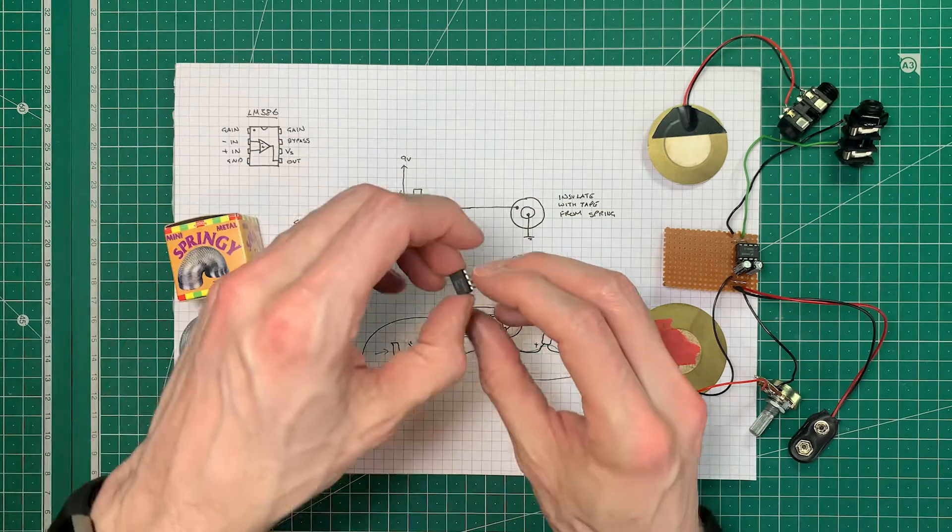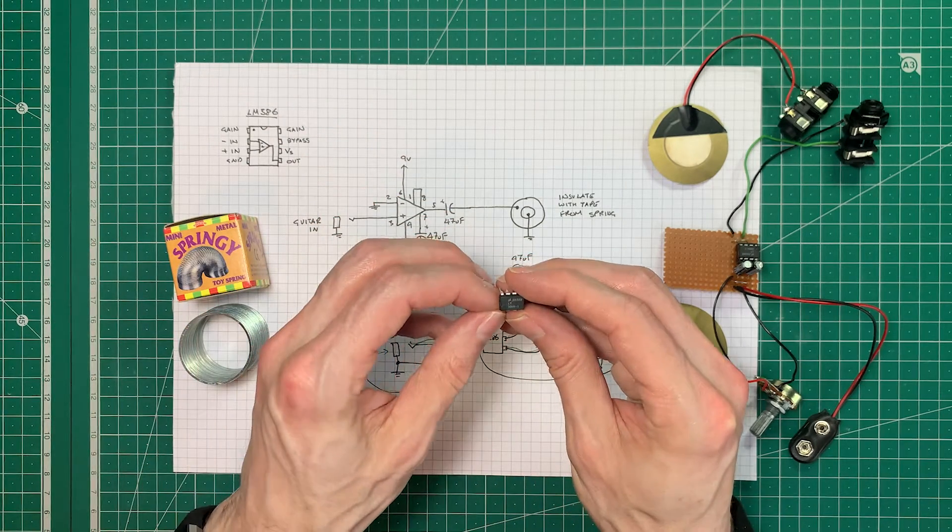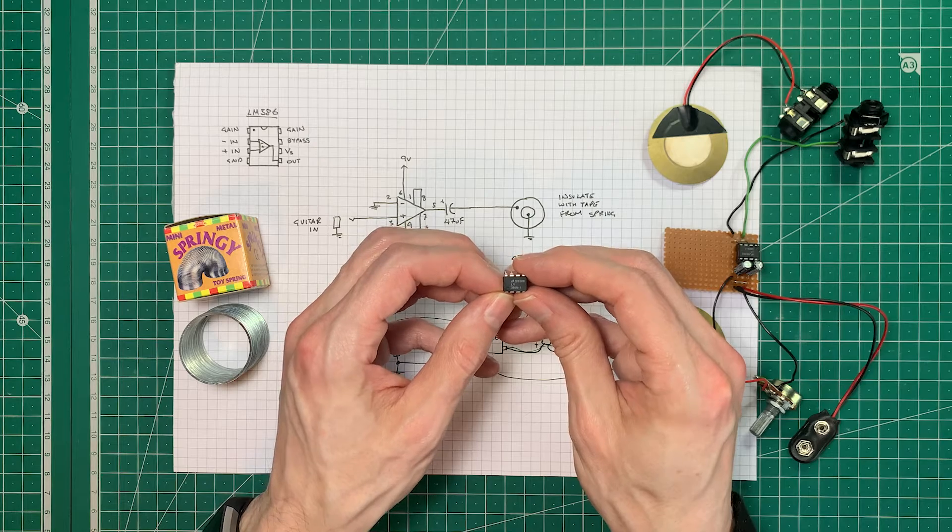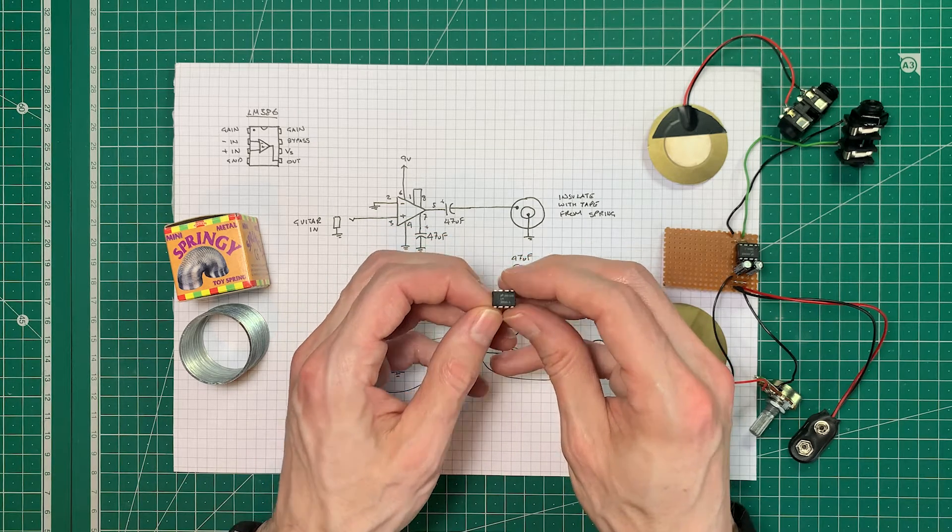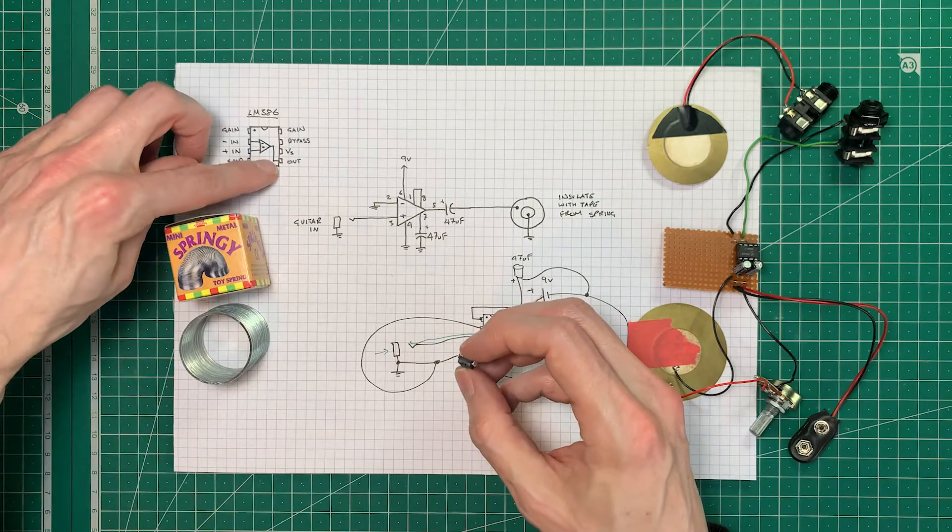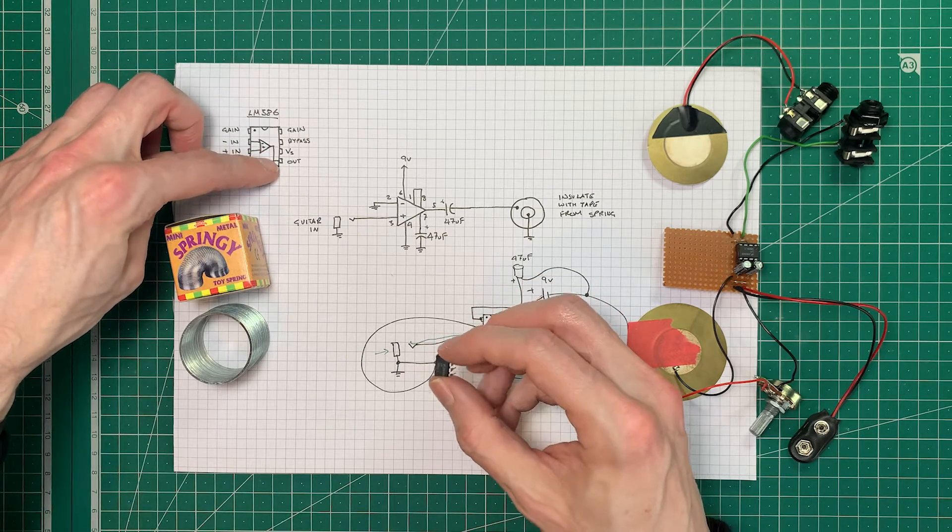You'll also need one of these which is a 386 chip and this is a power amplifier on a chip. It does look like an op amp but it isn't and you'll note the pin out there of the output is different to an op amp as well.